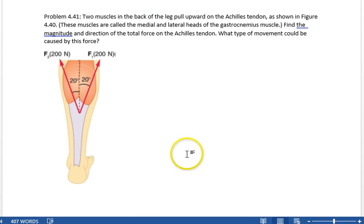If we look at each one of these, there is the 200 newtons in this direction. So the vertical component of this one is 200 newtons times cosine of 20 degrees. The horizontal component is 200 newtons times sine of 20 degrees.